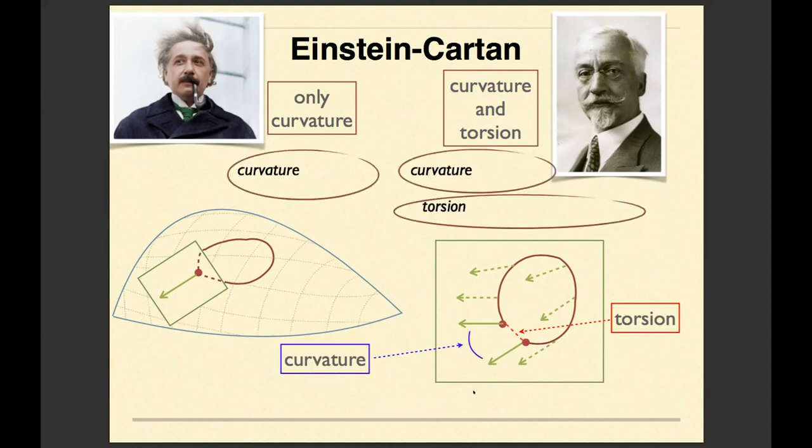So as a conclusion, one can see that Einstein's general relativity is based on curvature, while in the theory of Cartan, there are two actors: curvature, the same as in general relativity, and also torsion.